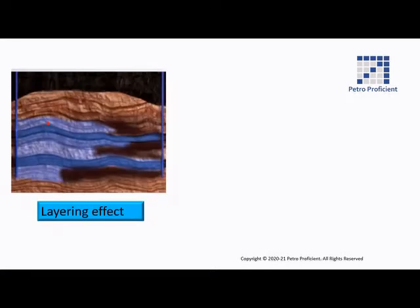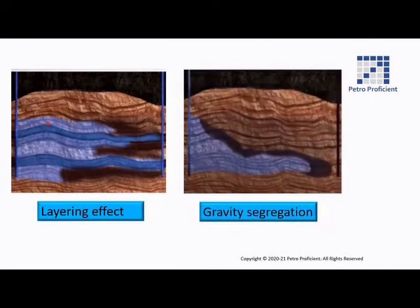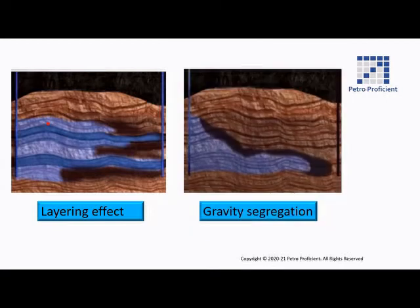The illustration shows the factors affecting the water flooding process. The permeability of the rock is not uniform, and water tends to flow through those layers having higher permeability, as shown in the illustration. This is called the layering effect. Secondly, water being heavier than oil, it tends to slump down — this is called gravity segregation. Gravity segregation leads to early breakthrough of the injected fluid. These two effects reduce the vertical sweep efficiency.